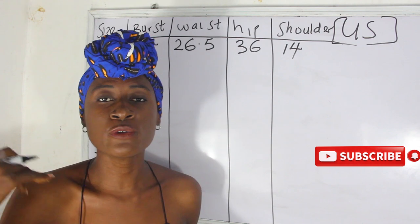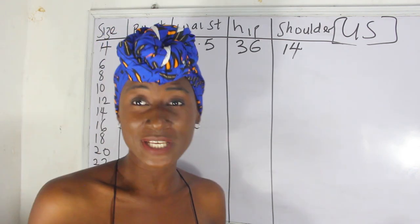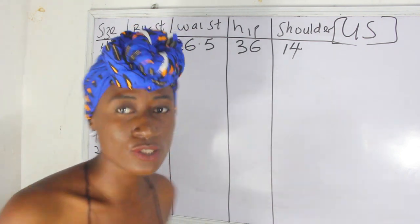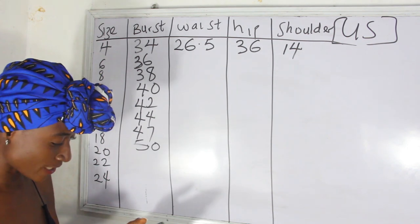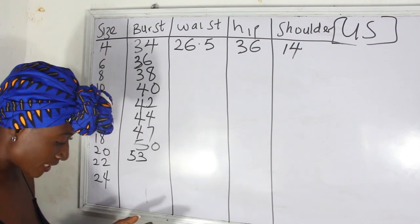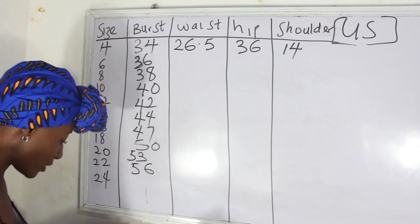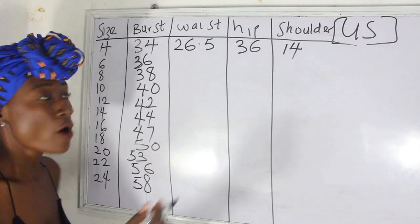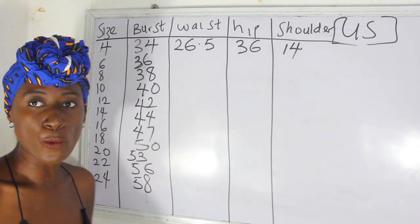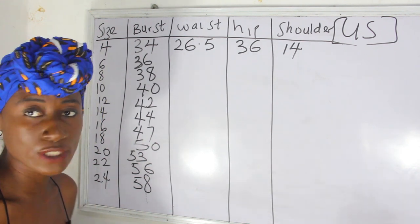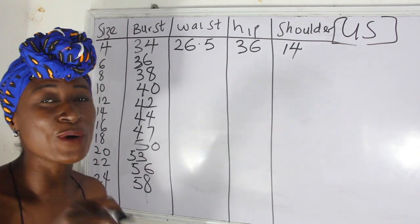From the lower sizes, measurements increase at a bigger rate because lower-body sizes usually run larger, so you add more for bust room allowance. For size 16 we have 47 inches. For size 18 we have 50. For size 20 we have 53. For size 22 we have 56. For size 24 we have 58. So from size 16 downward we're adding 3 inches for bust room allowance.